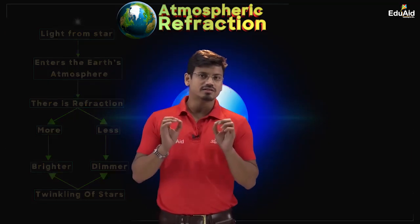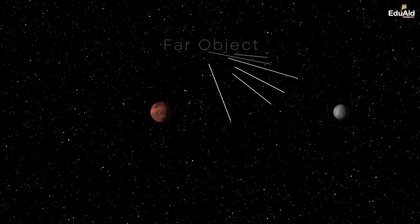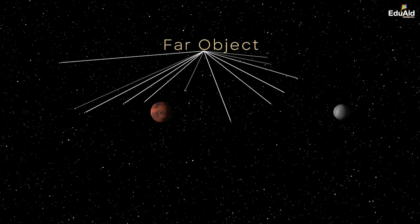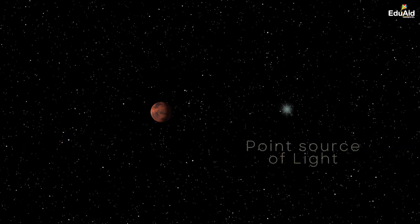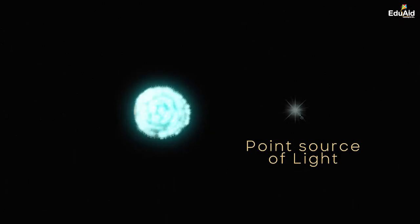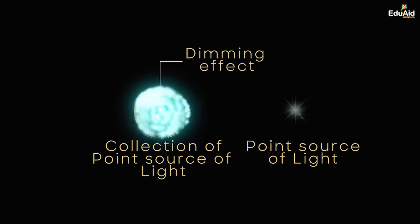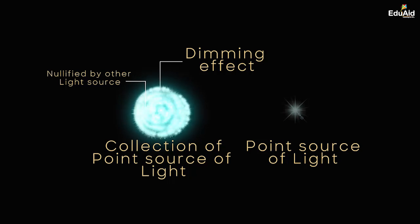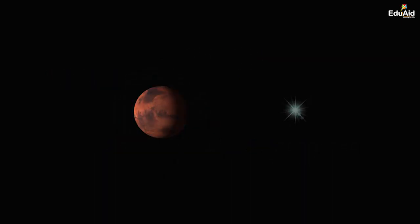Stars twinkle, but planets do not. Stars are located at a very far distance from us compared to planets, so we can consider stars to be point sources of light. A planet can be considered a collection of point sources of light. The dimming effect produced by some point sources is nullified by the brighter effect of other point sources, so the brightness of the planet remains the same and planets do not appear to twinkle.